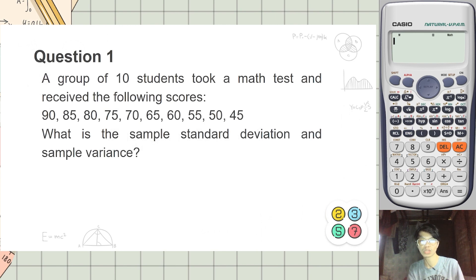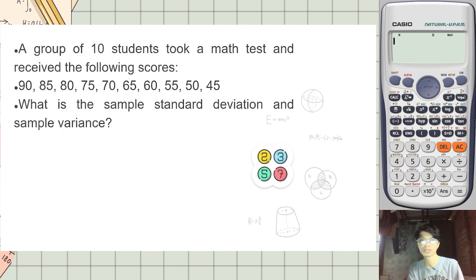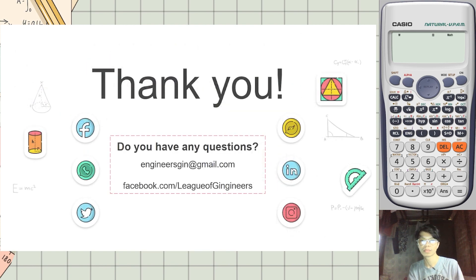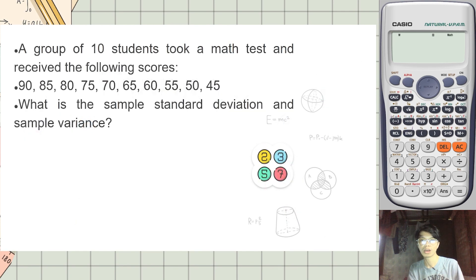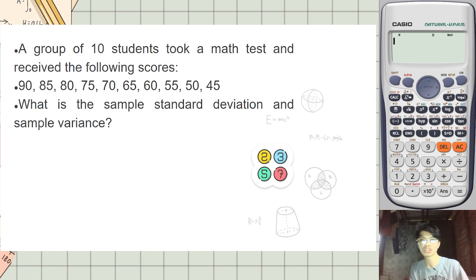Question one: a group of 10 students took a math test — similar to the example in our mean, median, and mode discussion. What is asked here is the sample standard deviation and sample variance. There is a formula for this, but we will use the calculator technique for this one.